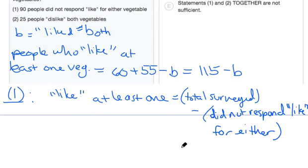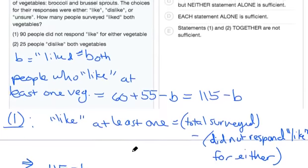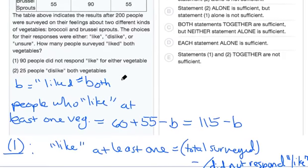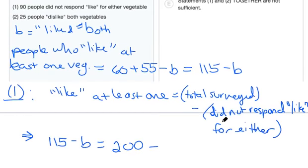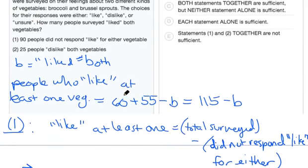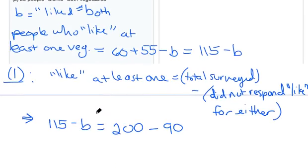The people who liked at least one of the vegetables is 115 minus B. Replacing the left side of our equation: 115 minus B equals the total people surveyed. The question tells us 200 people were surveyed, so we have 115 minus B equals 200 minus 90, which is the number from statement one. This is an equation we can actually solve for B, and since B is the value we were looking for — how many people liked both vegetables — this statement alone is sufficient.